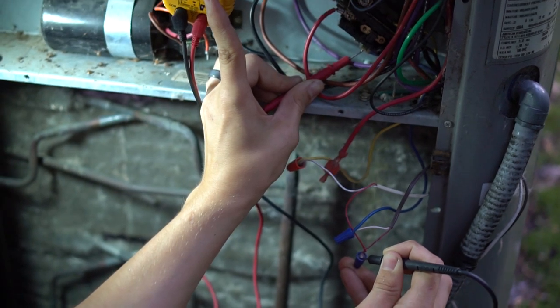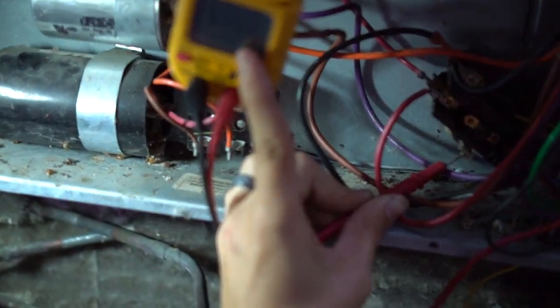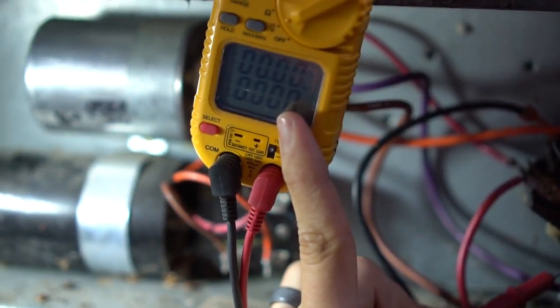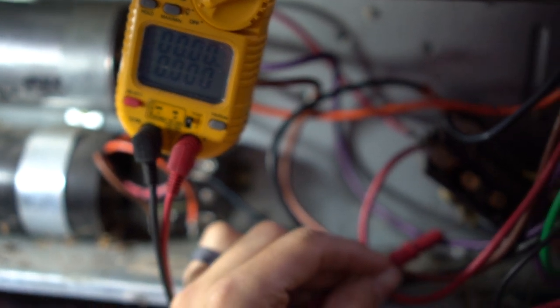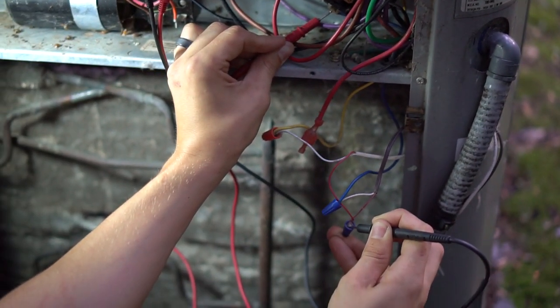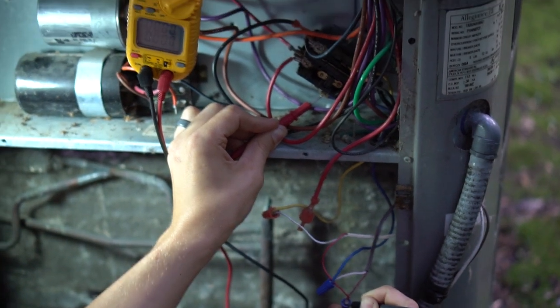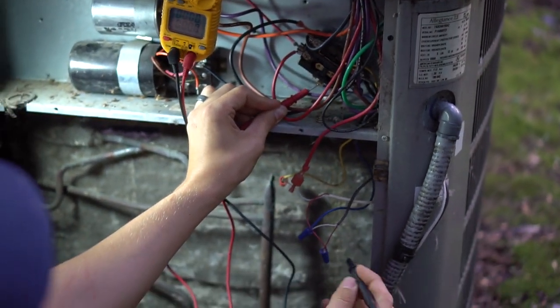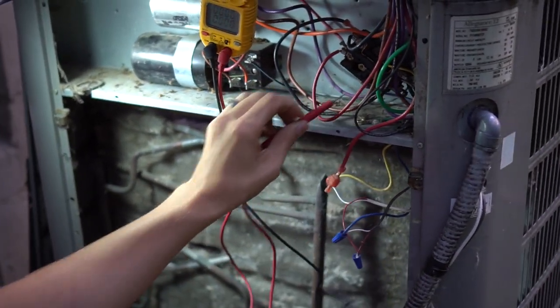I have zero volts right here, but that's because my thermostat is off right now. If your thermostat is calling for cooling, you should have 24 volts here. So once you verify that you have 24 volts coming from your furnace, then you just have to verify if that voltage is going out of the power saver switch.